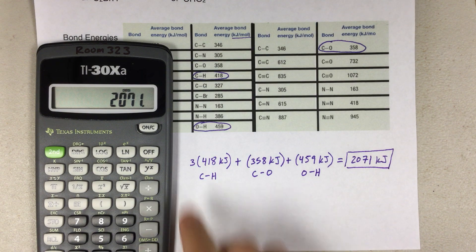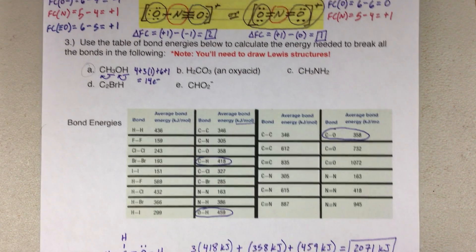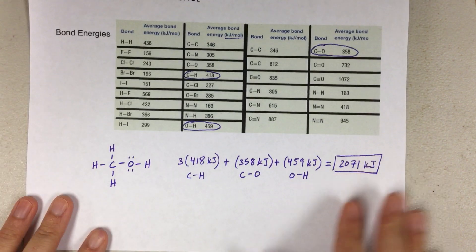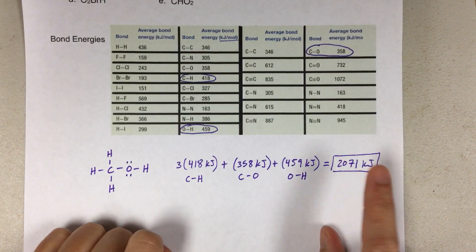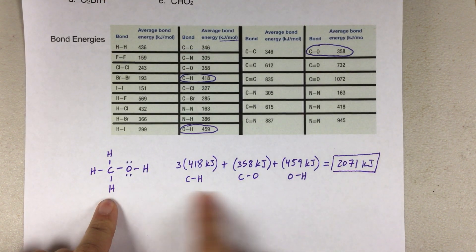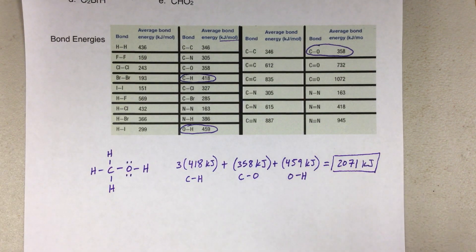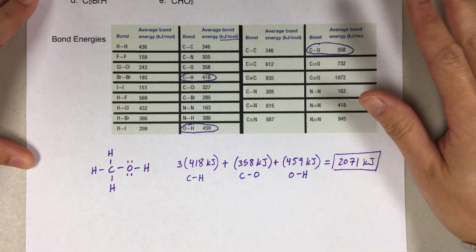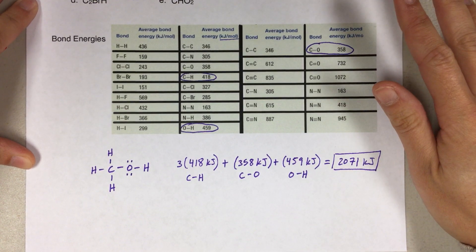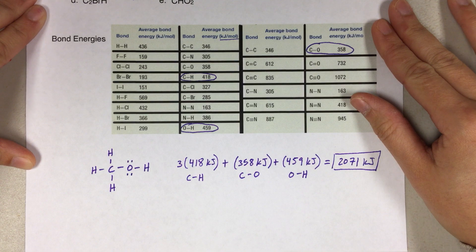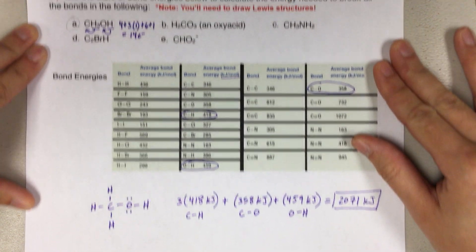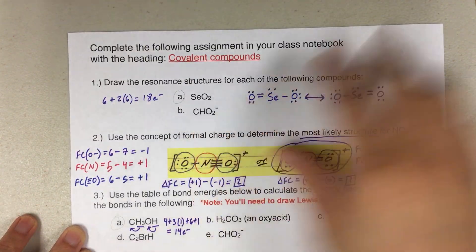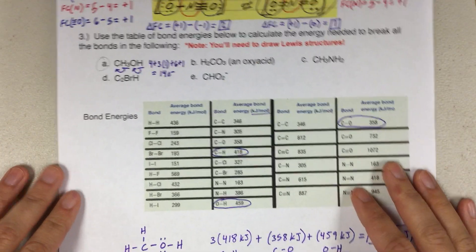That's our answer. Keep in mind that for bond energy questions, you have to draw a Lewis structure first. Once you have it, use the table to find all the values and do your calculation — and show the work to lead up to the final answer. Those are the three types of problems on your covalent compounds assignment. Let me know if you have questions — you have a few more bond energy problems and one more resonance. Easy work. Good luck and have fun.